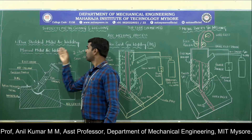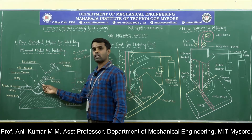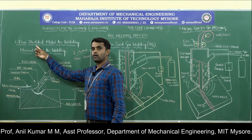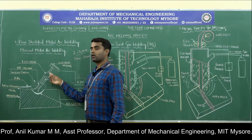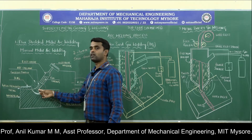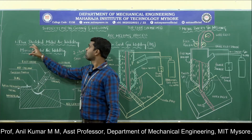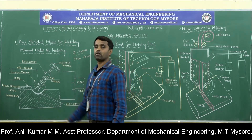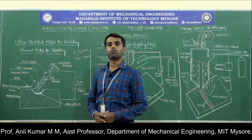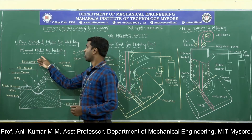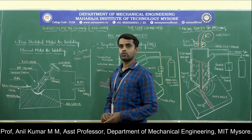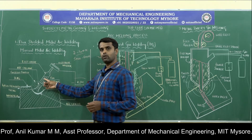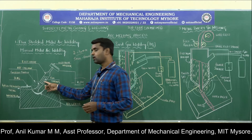It is referred to as 'flux shielded' because the flux is coated on the electrode and this flux forms a shield. A metallic electrode is used and the electric arc serves as the heat source — hence it is named Flux Shielded Metal Arc Welding. 'Manual metal arc welding' refers to the fact that the welding is carried out manually by a human being. In this process, a consumable electrode is used with flux coating.